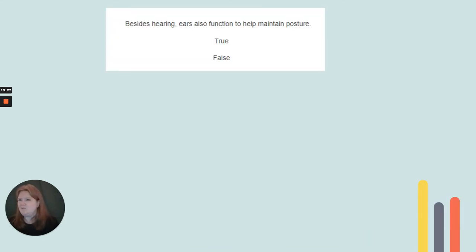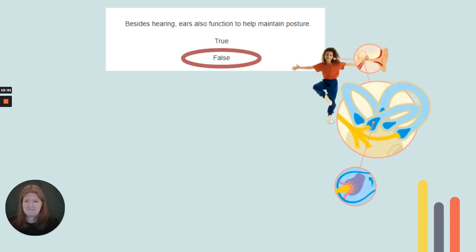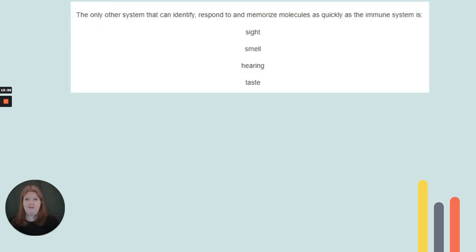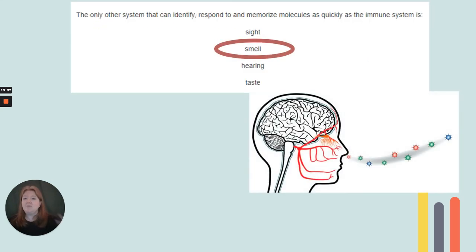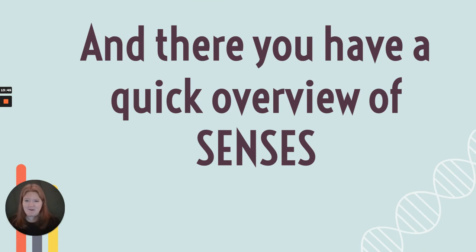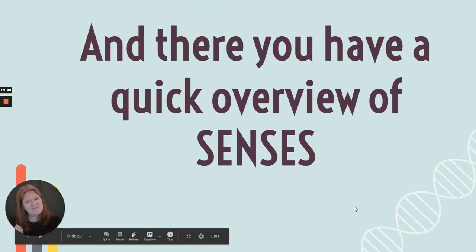Besides hearing, ears function to maintain balance and equilibrium — not posture. And the only other system that can respond to and recognize things as quickly as the immune system is smell — smell is amazing. And there you have it — a quick overview of the senses. Hope you learned something new or at least reviewed something in a fun way.